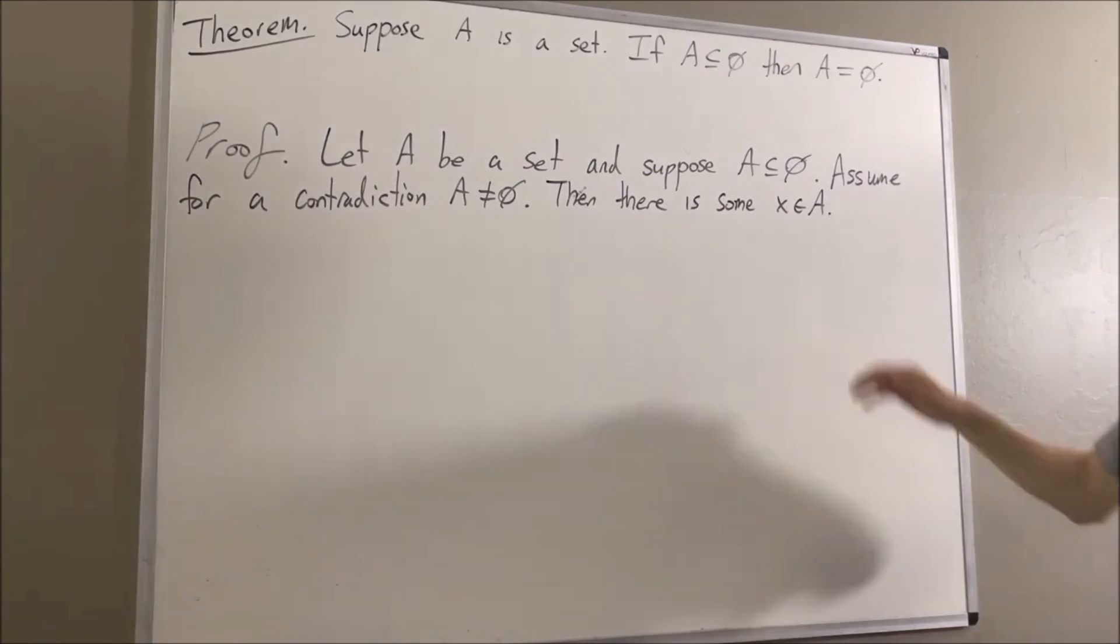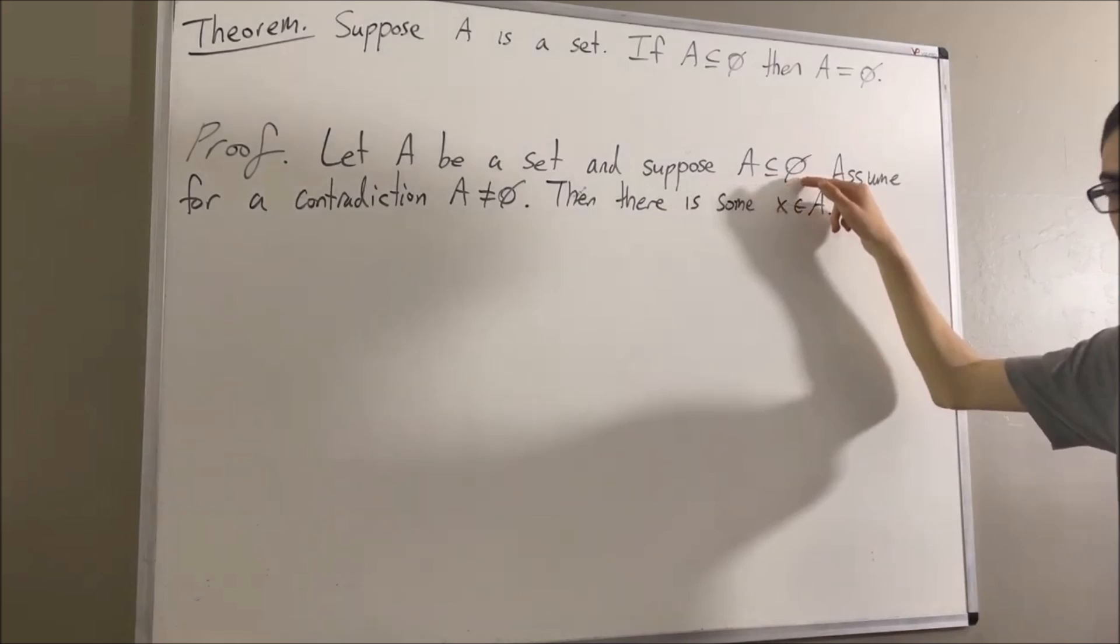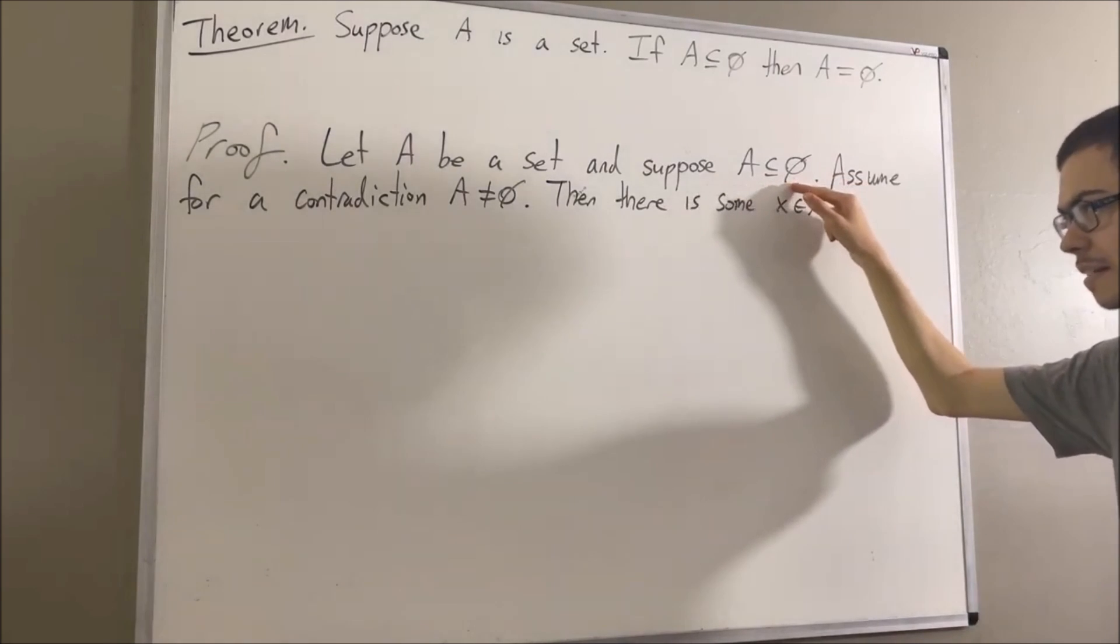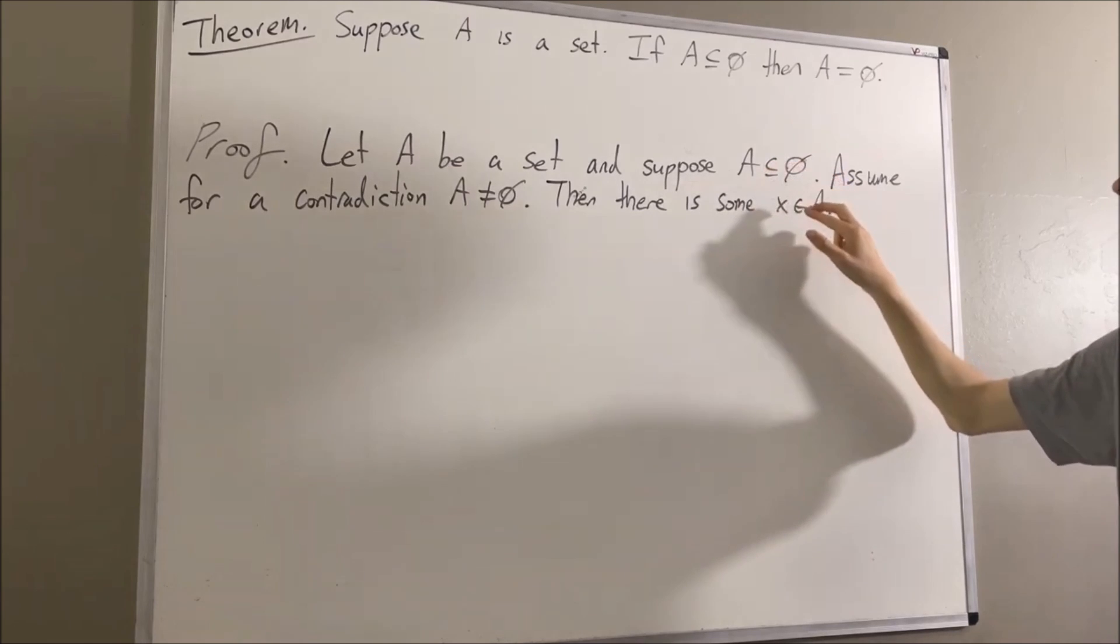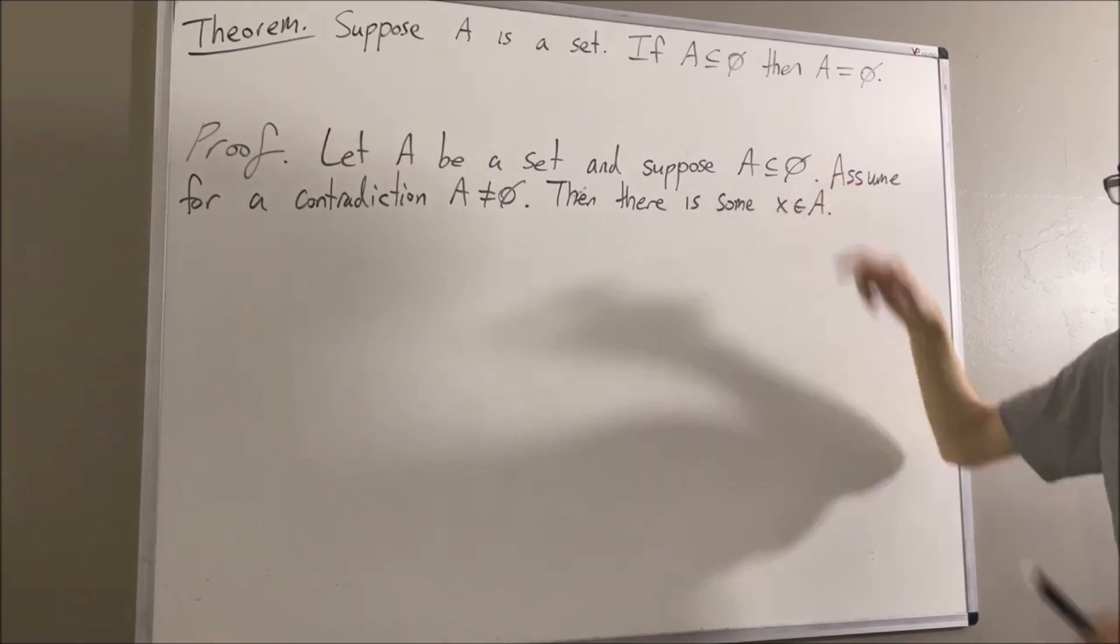Now, since A is a subset of the empty set, what this means is that every element of A is also in the empty set. Therefore, since X is an element of A, it follows that X is also an element of the empty set.